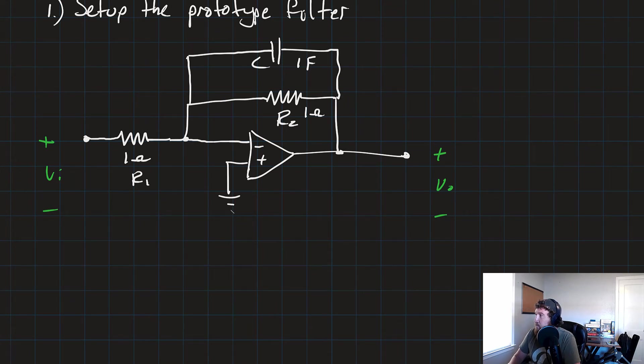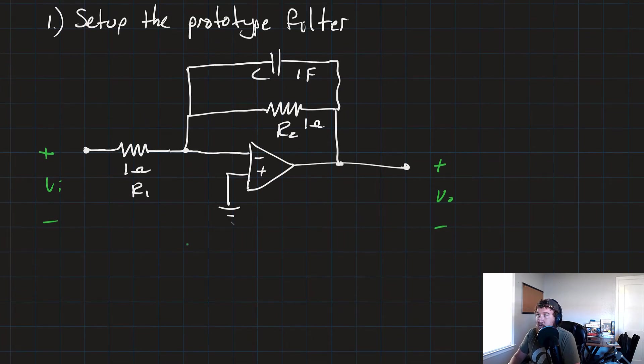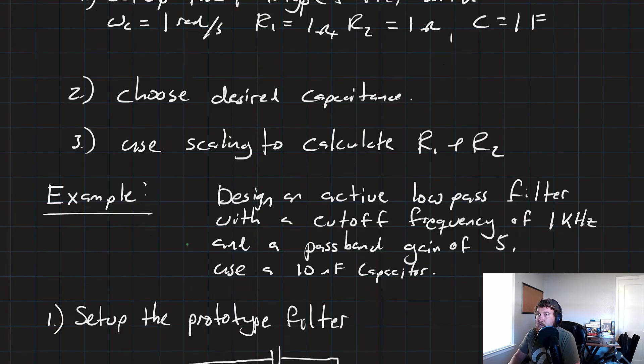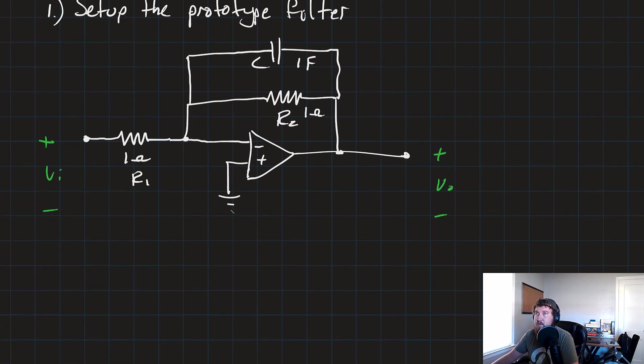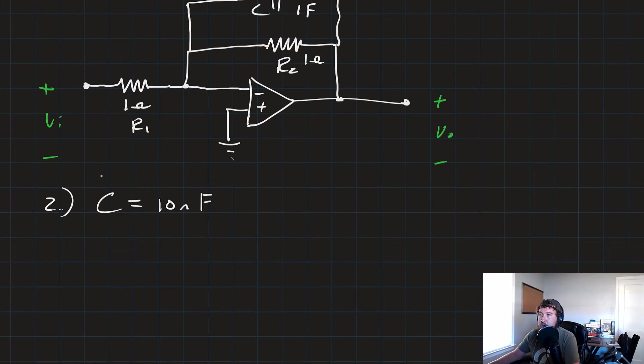The next thing we need to do is choose the desired capacitance. That was given to us in the problem statement. So we're going to set C equal to 10 nanofarads.